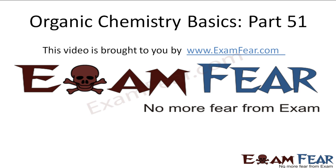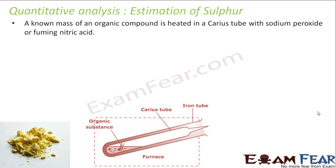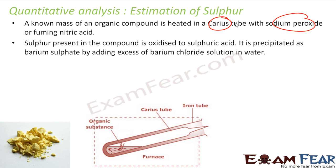Hello friends, this video on organic chemistry basics part 51 is brought to you by examfear.com. Now let's do estimation of sulfur. Sulfur also uses the Carius method. In this case, sulfur is heated with sodium peroxide or nitric acid, so the sulfur present gets oxidized to sulfuric acid.